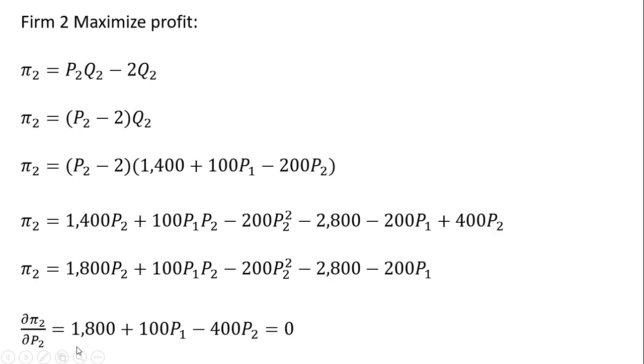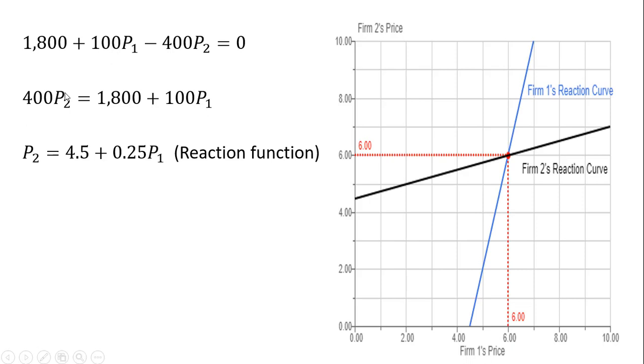Now we take the partial derivative of this profit function with respect to firm 2's price. Setting that partial derivative equal to zero, we get this result. We're going to now solve this for firm 2's price. Doing that we get firm 2's reaction function.